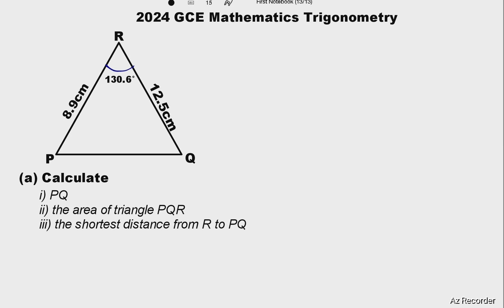In the diagram there is triangle PRQ. PR is 8.9 centimeters, RQ is 12.5 centimeters, and angle PRQ is 130.6 degrees. The question asks us to calculate PQ.